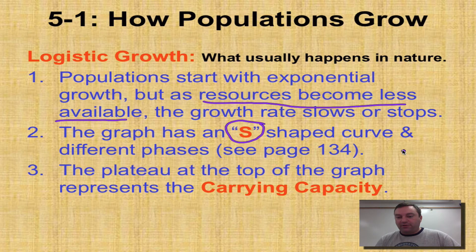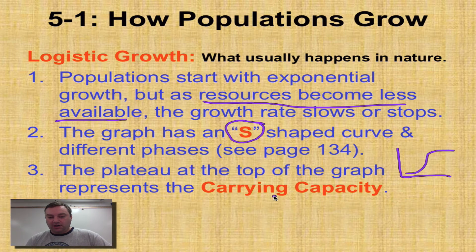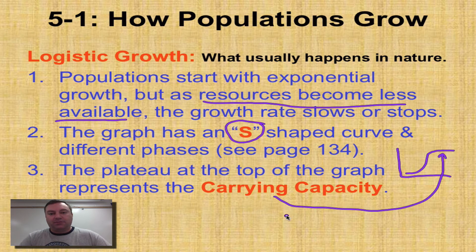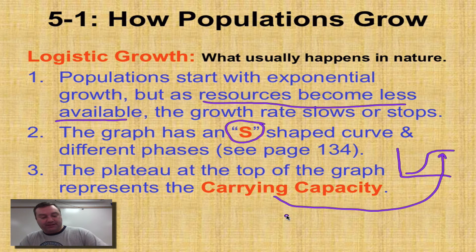There's a picture on page 134, but essentially you go through your exponential phase and then you begin to plateau off — humans haven't reached this part yet. The plateau at the top of the graph is called the carrying capacity: the maximum number of individuals that can be supported by the amount of resources in that given habitat. We haven't found the carrying capacity for humans yet on this planet, which is kind of scary and exciting all at the same time.